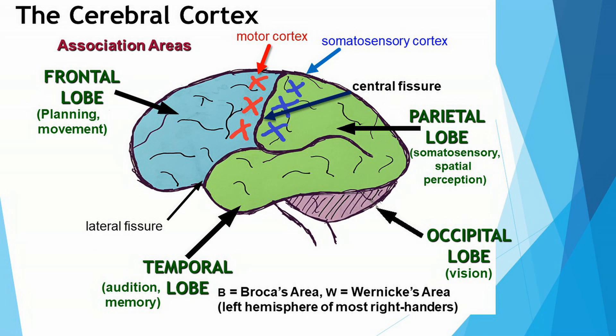The frontal lobe is responsible for planning and movement. The frontal lobe is involved in high-level executive cognitive abilities — for instance, planning ahead in a multi-step process to achieve some goal. Imagine trying to make a cake: you'd have to make sure you had all the appropriate pots and pans, all the ingredients, find a recipe, and follow it step by step. There are multiple steps involved in achieving that goal. So: frontal lobe, planning, and movement — we'll talk about movement as a function later on.